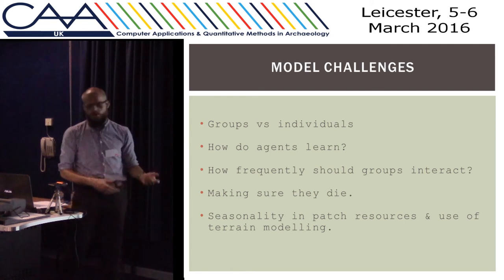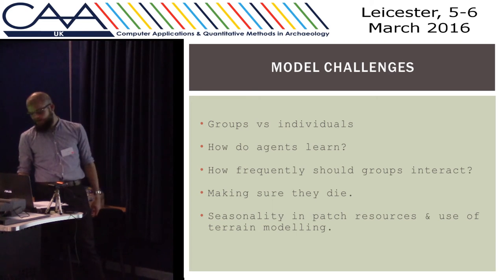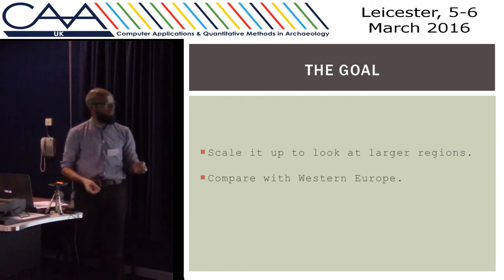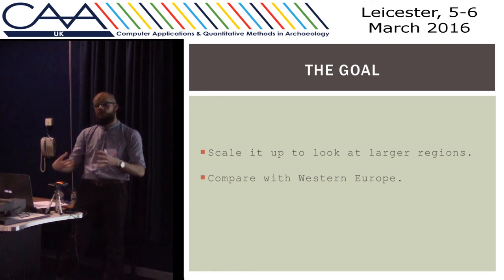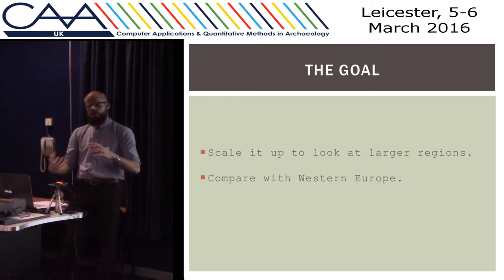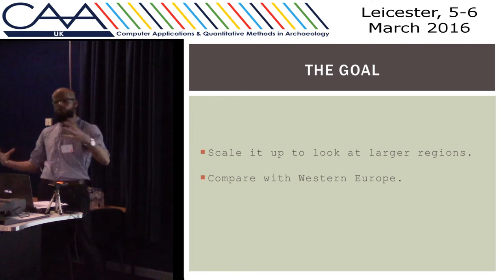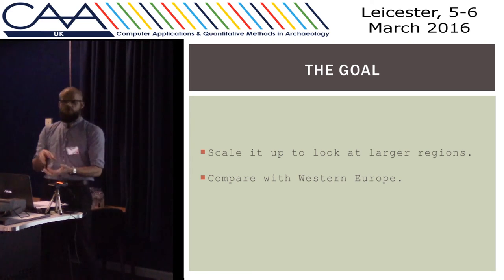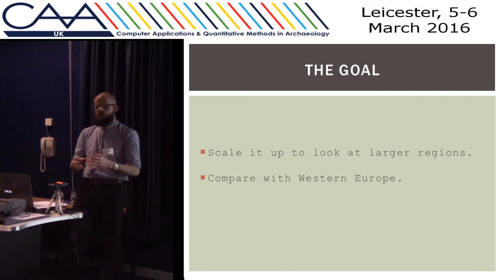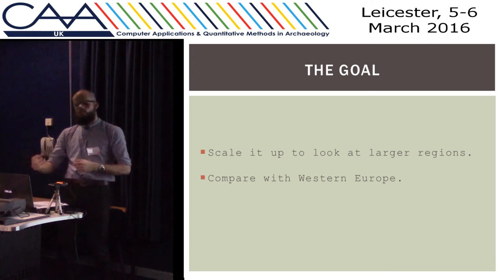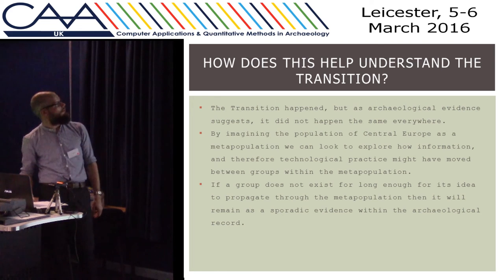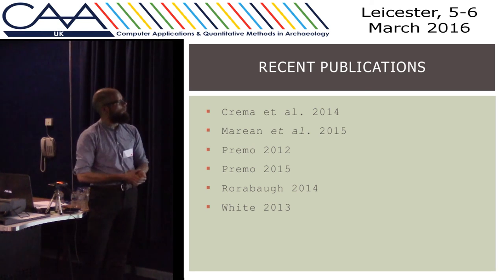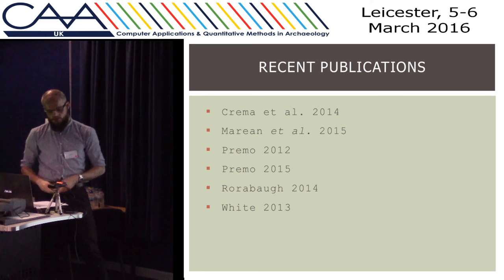How frequently should they interact? These are all questions guiding my research at the minute. The goal is to be able to scale it up to look at larger regions. The advantage of the agent-based model is that you can look at quite a small area, and then hopefully I'll be able to compare Central Europe with Western Europe and challenge the idea that transitions only happen on a broader scale, and make it more interesting on a local level — looking at local transmission and local scale change, then scaling up to see if the same factors affect things across a broader continental scale. Thank you.